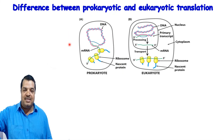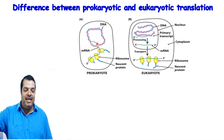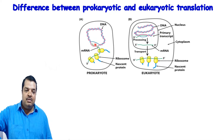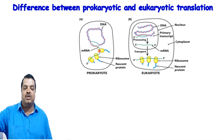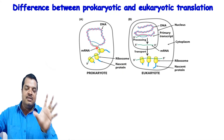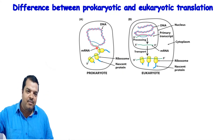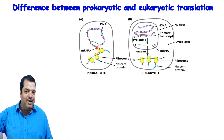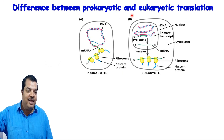In prokaryotes, everything is in the cytosol. In prokaryotes, DNA replication is followed by transcription, and even before transcription is complete, translation begins — so transcription and translation can occur simultaneously in prokaryotes. But in eukaryotes this is not possible because both processes occur in different compartments.